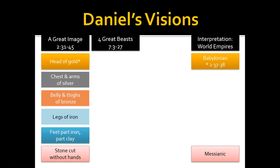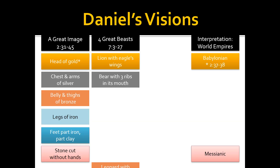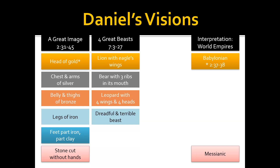In Daniel chapter 7, there's another vision, this time given not to a Babylonian king, but to Daniel himself. Daniel was greatly troubled by the things that he saw and recorded them. The first thing he sees is a lion with eagle's wings. Then there's a bear with three ribs in its mouth, a leopard with four wings and four heads, and then a dreadful and terrible beast. From that dreadful and terrible beast, it speaks about another horn — a little one — that comes out.